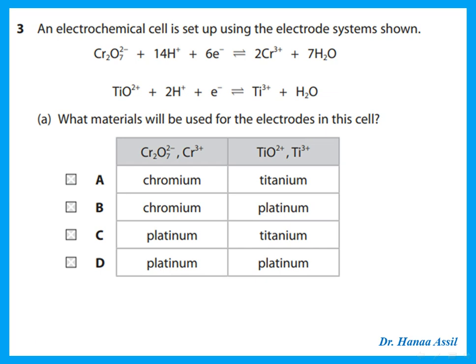An electrochemical cell is set up using potassium dichromate and titanium 3+ going to TiO₂⁺. What materials are used for the electrodes? The cell does not involve titanium metal or chromium metal, so the electrodes will not be any of these metals. The electrodes will be the inert platinum electrode.